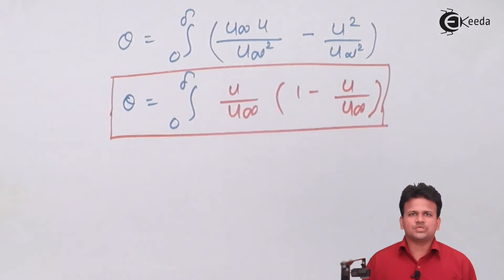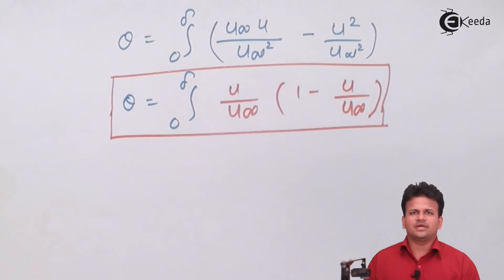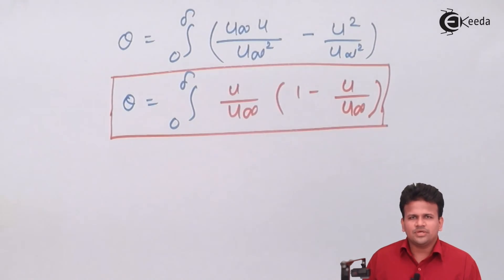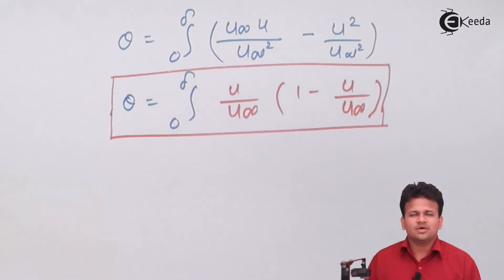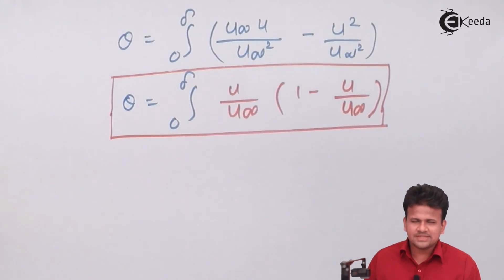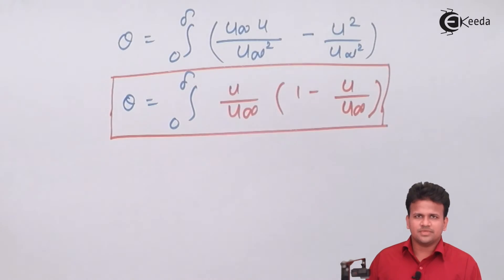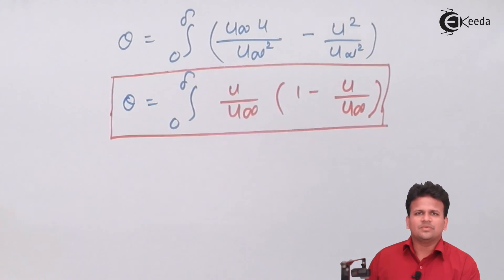The momentum thickness is due to the reduction in momentum caused by introducing a plate into a fluid flowing with free stream velocity U-infinity. I hope you have understood what is momentum thickness and the derivation of momentum thickness for a boundary layer concept. Thank you.